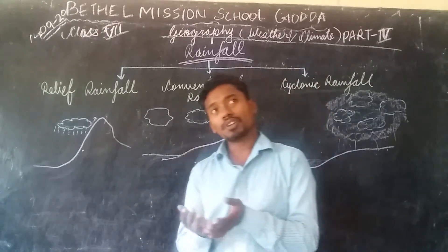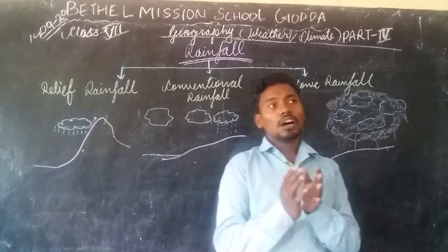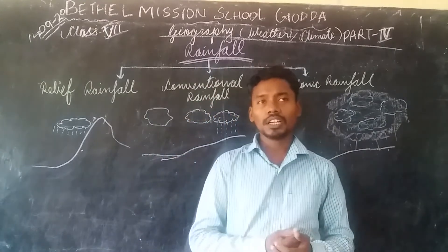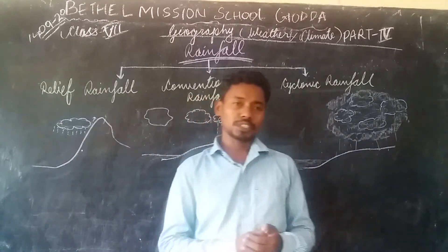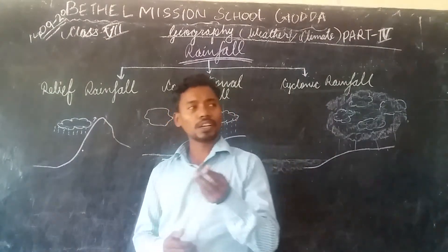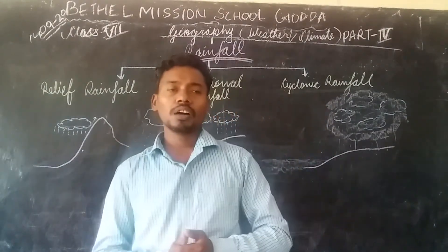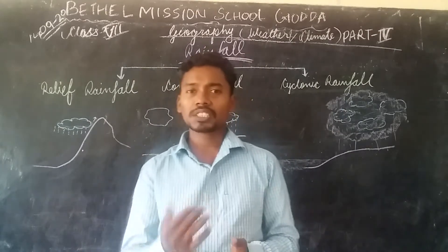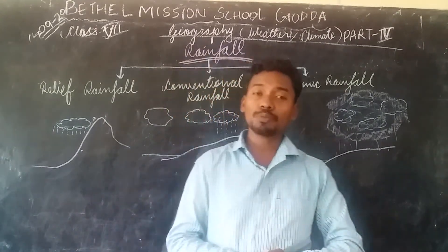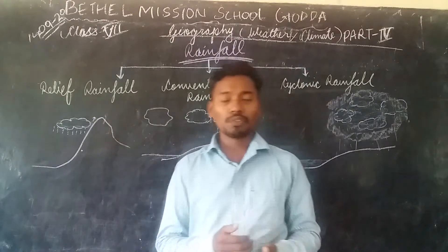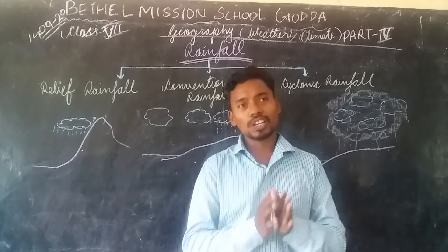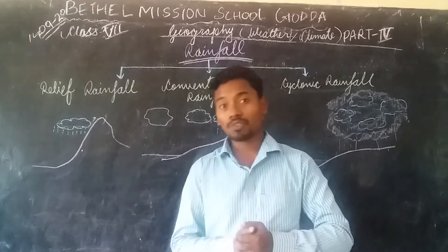Today we will be seeing how the moisture content present in the air affects the climate of a place. When moisture content is high in a particular place, it generally tends to bring rainfall. When rainfall comes, we need to understand what are the different types of rainfall.